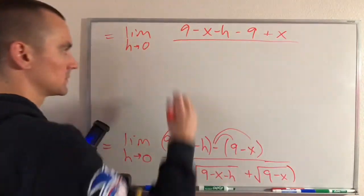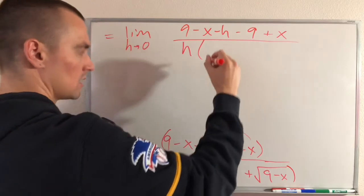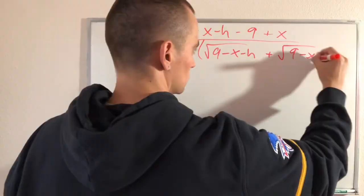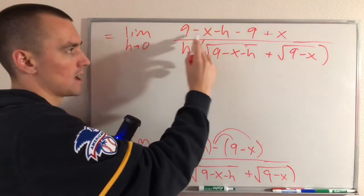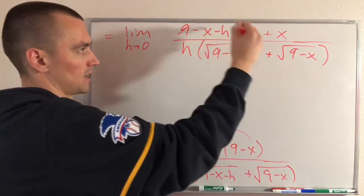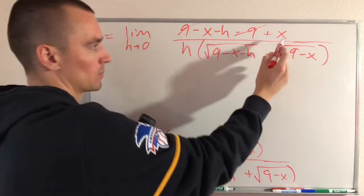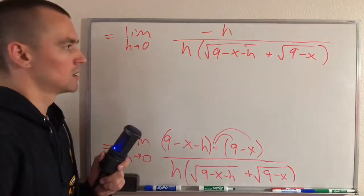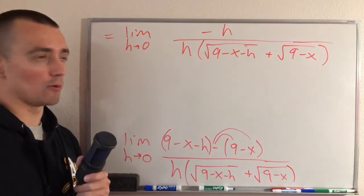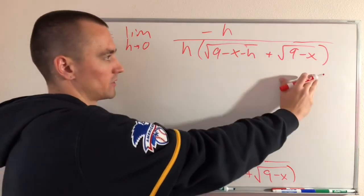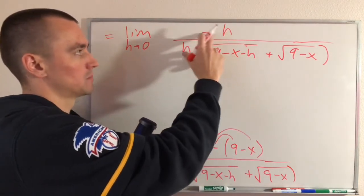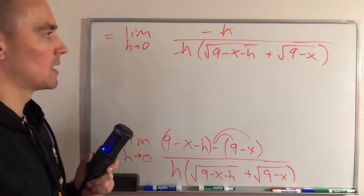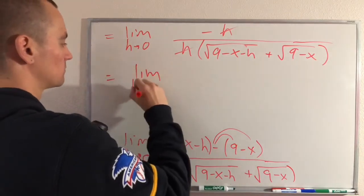And now you can see on our numerator we have 9 and a minus 9 so those are gonna cancel and then we have a minus x and a plus x so those are gonna cancel. So now all we have is a negative h on our numerator. So now we end up with exactly what we were hoping we would see. We have an h times a bunch of stuff down here and then we have an h basically times negative 1 up here. These h's now can cancel and we're just gonna be left with a much simpler limit which would be negative 1 over these square roots.